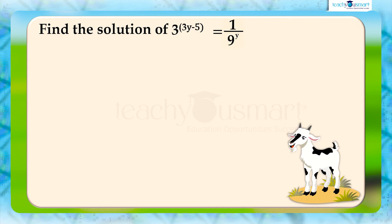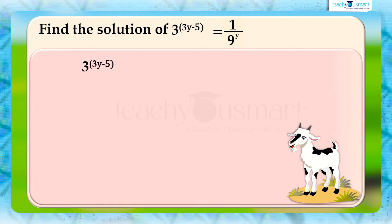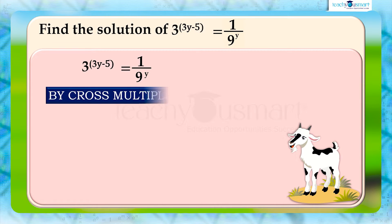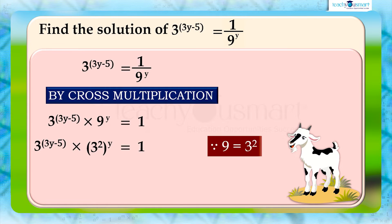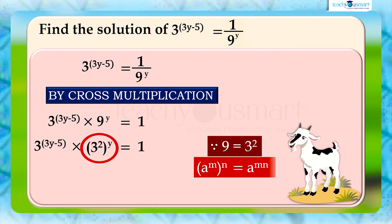The given expression is 3 raised to (3y minus 5) equals 1 by 9 raised to y. By cross multiplying, we get 3 raised to (3y minus 5) multiplied by 9 raised to y equals 1. Since 9 equals 3 squared, we can write 3 raised to (3y minus 5) multiplied by (3 squared) whole raised to y equals 1.